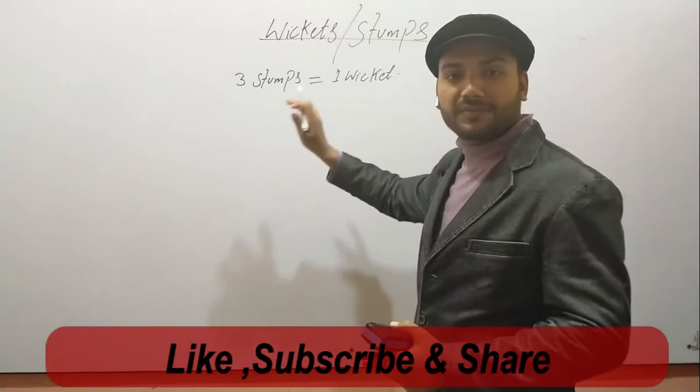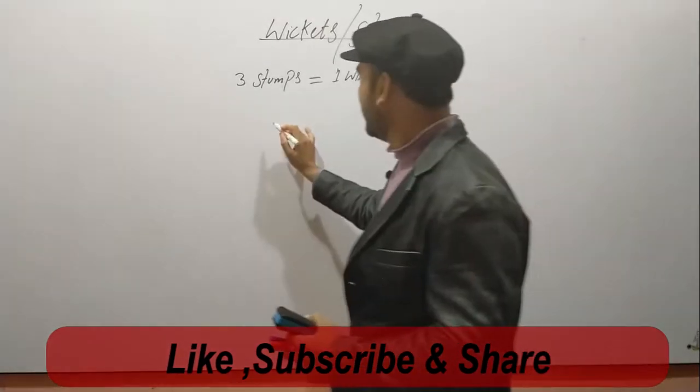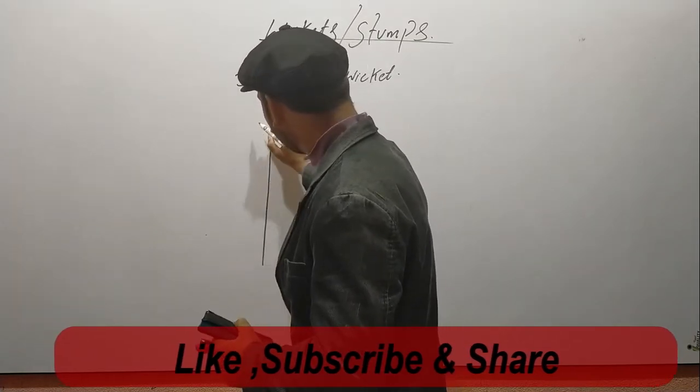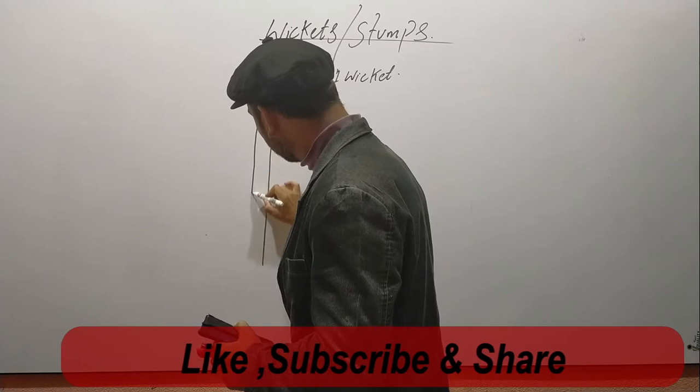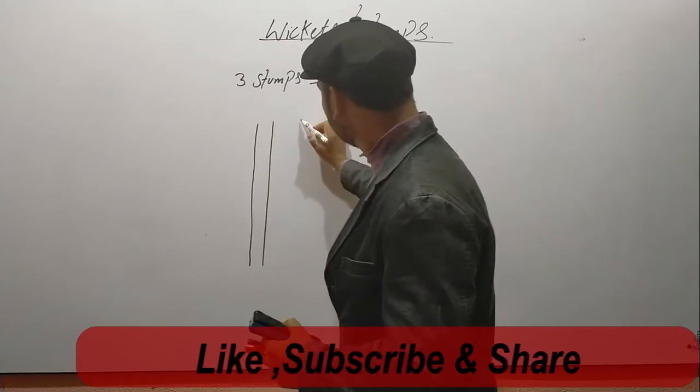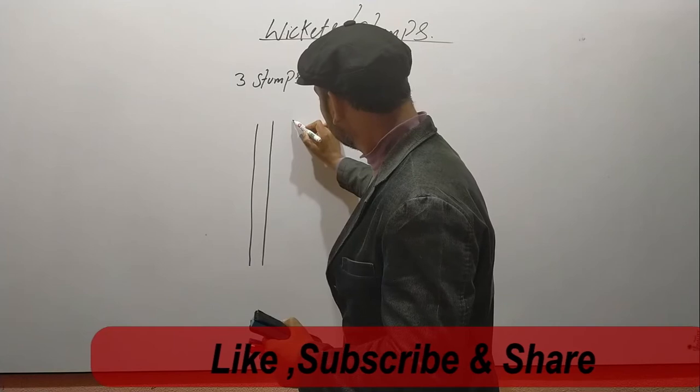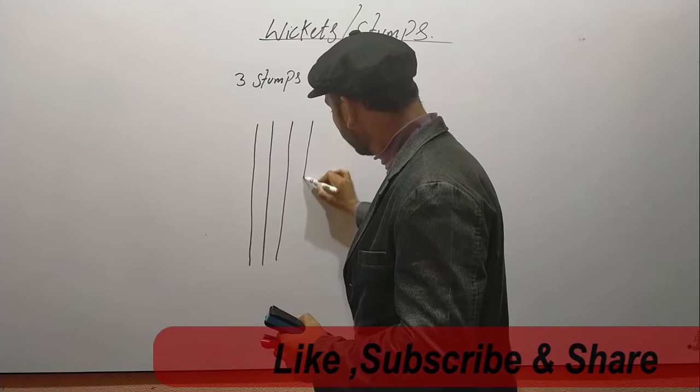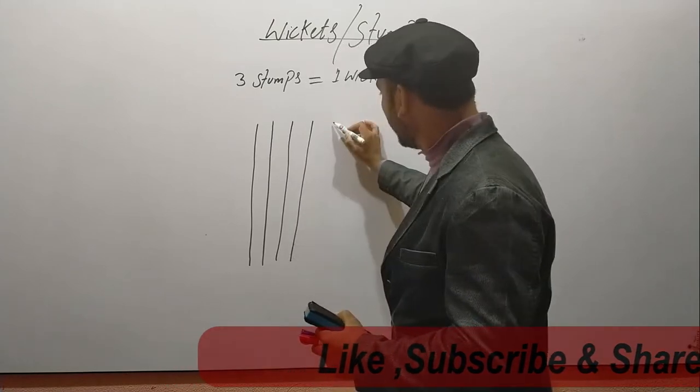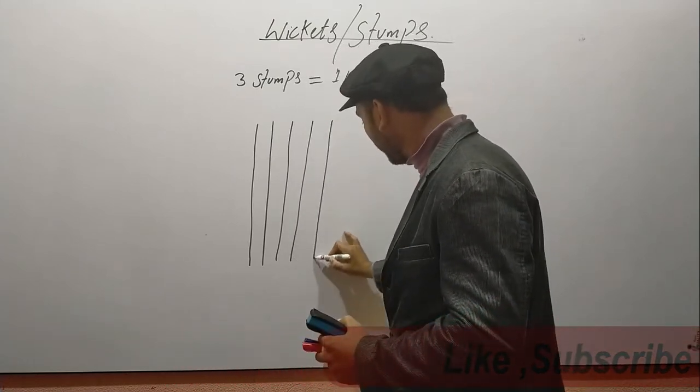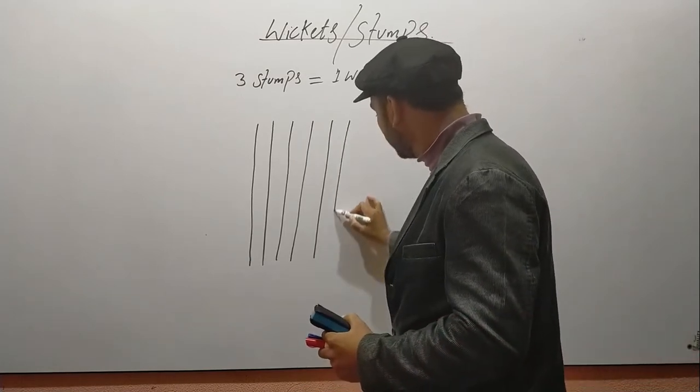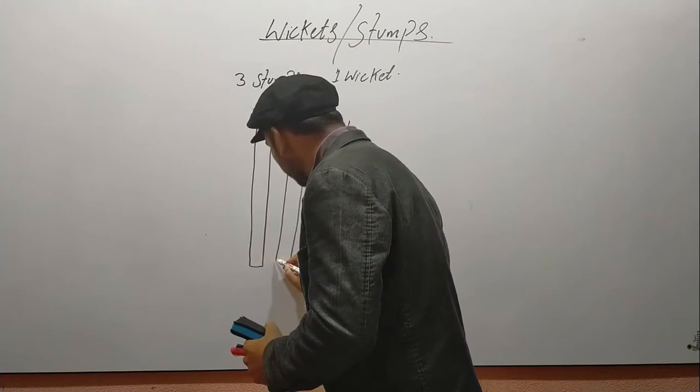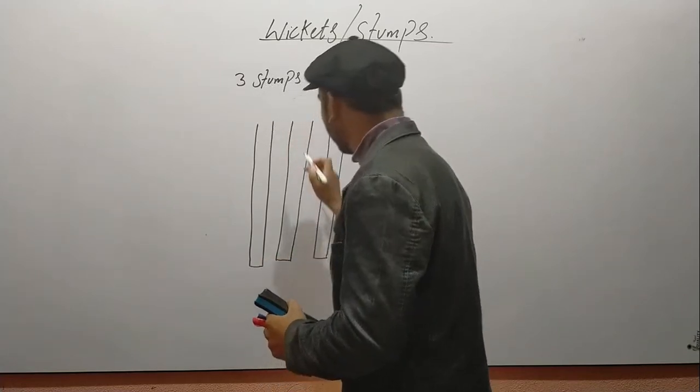Now let me tell you that three stumps, let's draw the length and sketch the length. This is the second length and we draw the length. We draw these stumps.